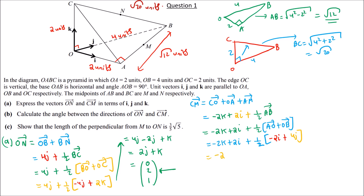Simplifying: CM = −2K + 2I − I + 2J = I + 2J − 2K. In column form, CM = (1, 2, −2). That is the answer for CM.